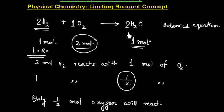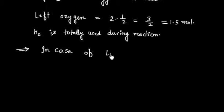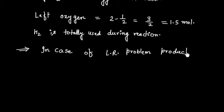In case of a limiting reagent problem, the product is decided by the limiting reagent. So we have an important rule: in a limiting reagent problem, the product is decided by the limiting reagent.